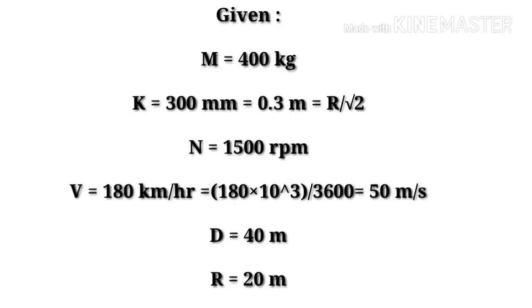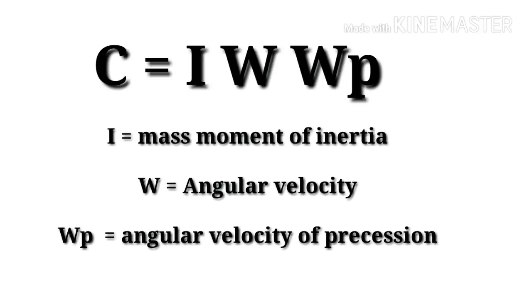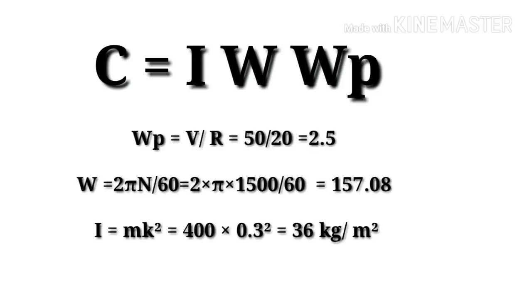To find the magnitude of the reactive gyroscopic couple, the formula is C = I·ω·ωp, where I is the mass moment of inertia, ω is the angular velocity of the rotor, and ωp is the angular velocity of precession. The formula for ωp is v/R = 50/20 = 2.5 rad/s.